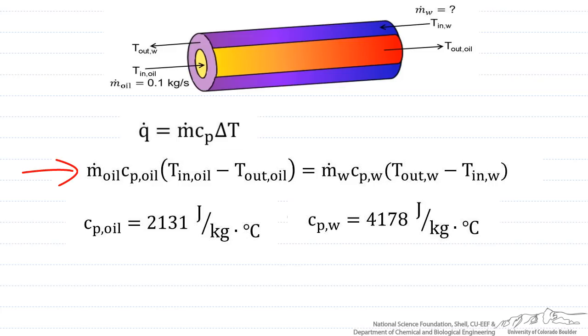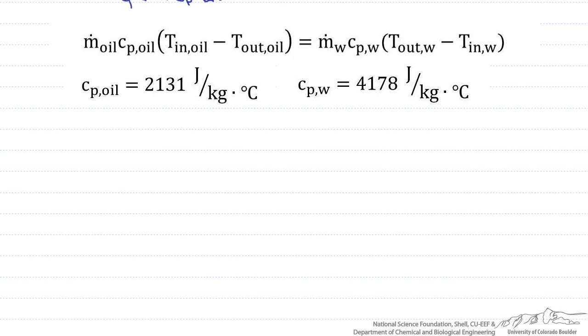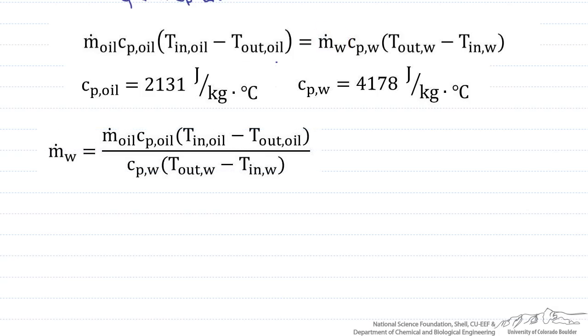So let's set up this equation here, and write it in terms of what we want to find, which is the mass flow rate of the water. So the mass flow rate of the water is going to be that mass flow rate of the oil times its heat capacity times the change in temperature, and this is going to be all divided by the heat capacity of the water times its change in temperature.